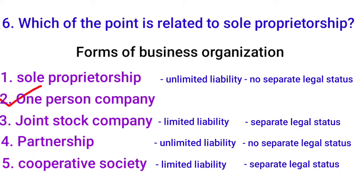Last form: one person company — the owner is one person. Students often ask: isn't that the same as sole proprietorship? The difference is that in sole proprietorship the liability is unlimited and the owner and business are the same. But in a one person company, liability is limited — even if the company has heavy losses, the owner's personal assets are protected.